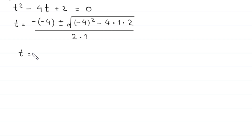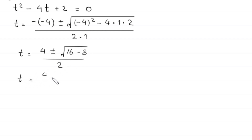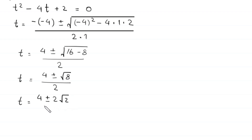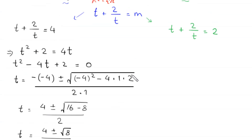So t equals 4 plus or minus square root of 16 minus 8, divided by 2. This gives t equals 4 plus or minus square root of 8, divided by 2. Since root 8 equals 2 root 2, we get t equals 4 plus or minus 2 root 2, divided by 2, which simplifies to t equals 2 plus or minus root 2.